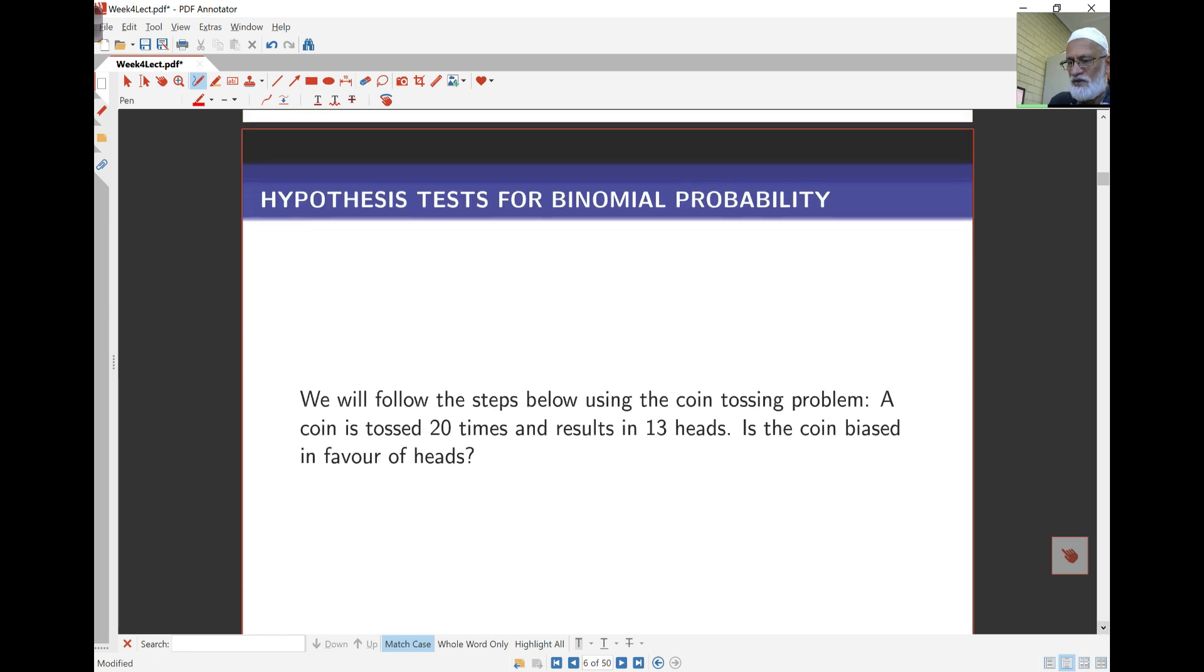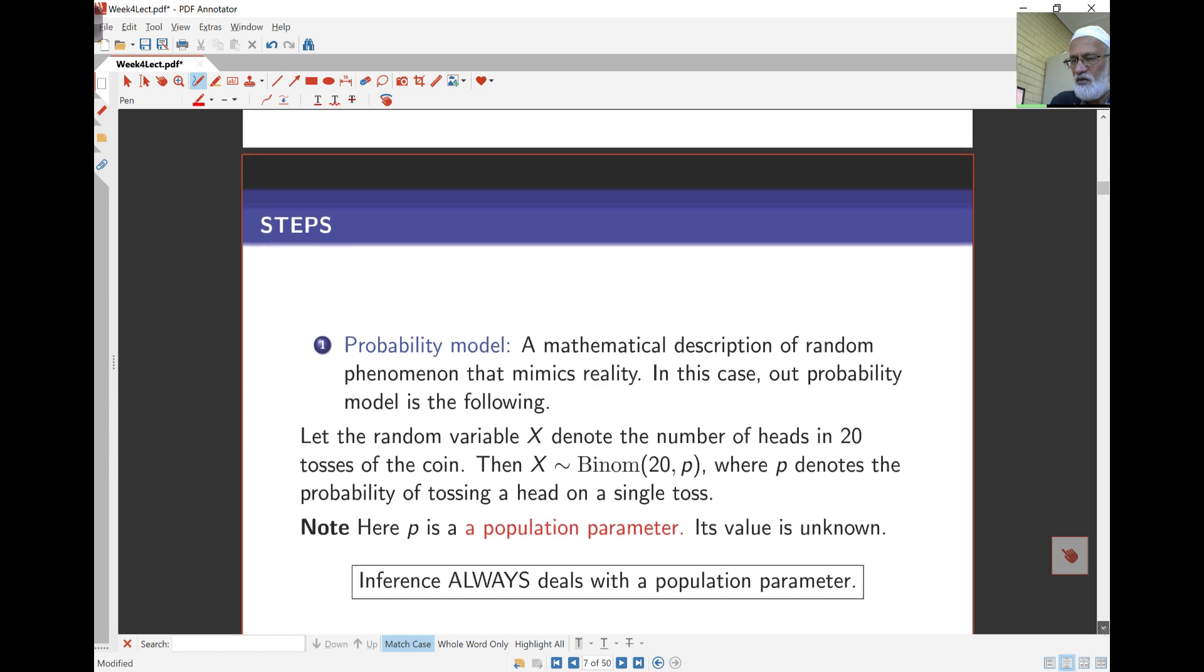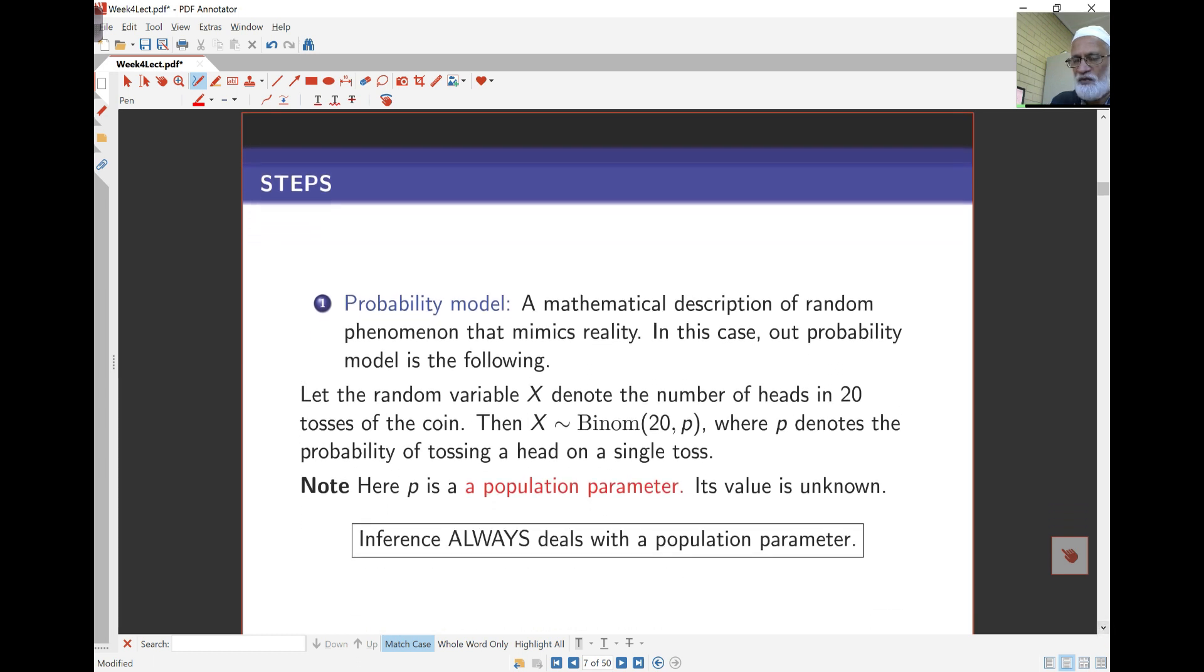We're looking at what's called hypothesis tests for binomial probability. The steps we're going to follow will be using the coin tossing problem. We've tossed a coin 20 times and we've observed 13 heads. Is the coin biased in favor of heads? The first step here is requiring a probability model. The question was about tossing a coin 20 times and obtaining 13 heads, then concluding if the coin was biased or not towards heads. We require a probability model for that, just to quantify things.